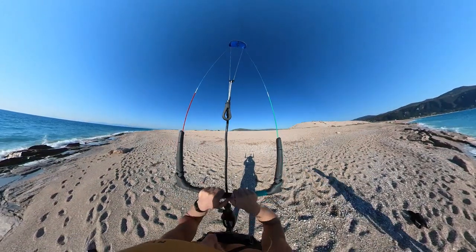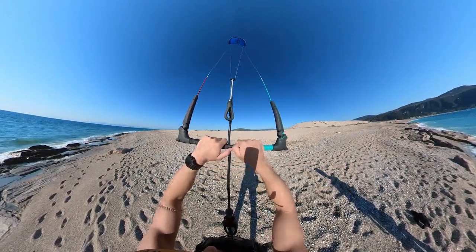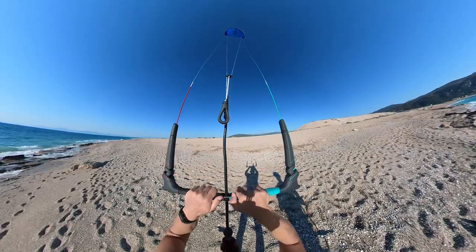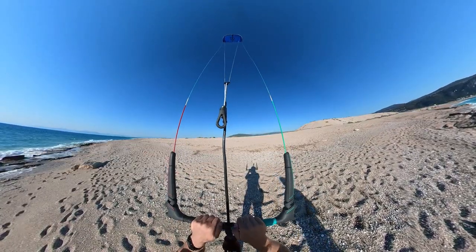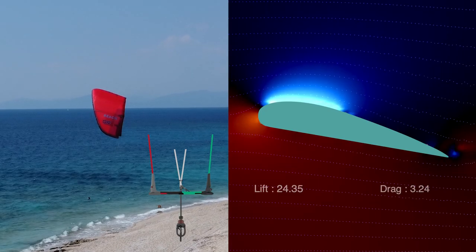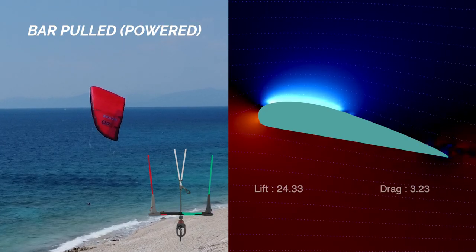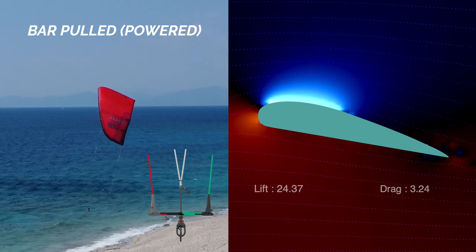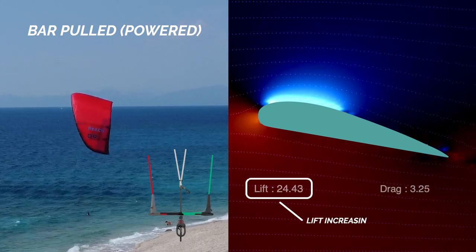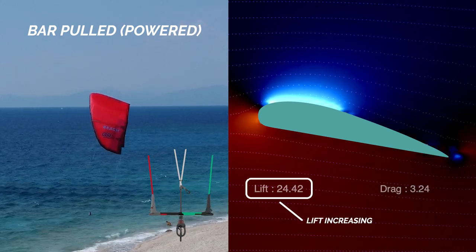By pulling or depowering the bar we are changing the angle of attack. When we pull the bar, the canopy above the kite becomes more curved, causing faster acceleration of the airflow and creating more lift.